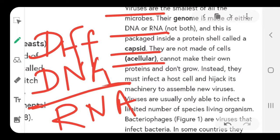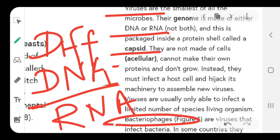Viruses cannot make their own protein, so they just cannot grow on their own. They can only grow when they come into a host cell and infect it. One important virus to note is called bacteriophage — this is the virus that attacks bacteria. So under viruses, these terms should be known: they are the smallest, made up of DNA or RNA, enclosed in a capsid, and are acellular.